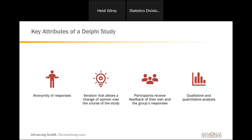The key attributes of a Delphi study: first of all, the anonymity of responses. This is very important. We don't want anybody to know what anyone else is saying or who is agreeing and who is disagreeing. We do that through sending out surveys — either paper surveys through the mail as the RAND Corporation did, in person with pieces of paper in a room, or most commonly using some kind of survey software where people can fill out a survey on their own time without putting their name in.